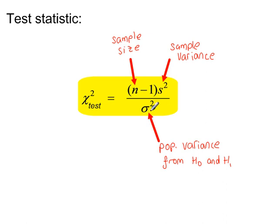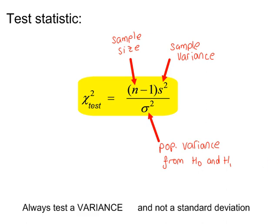Sigma-squared is the value that we test, and it's the value that you write down in H0 and H1. The population that the data is taken from is assumed to be normal. We always test a variance and not a standard deviation, so if a standard deviation is given, square the value to get the variance, and then carry on with the test using the variance.